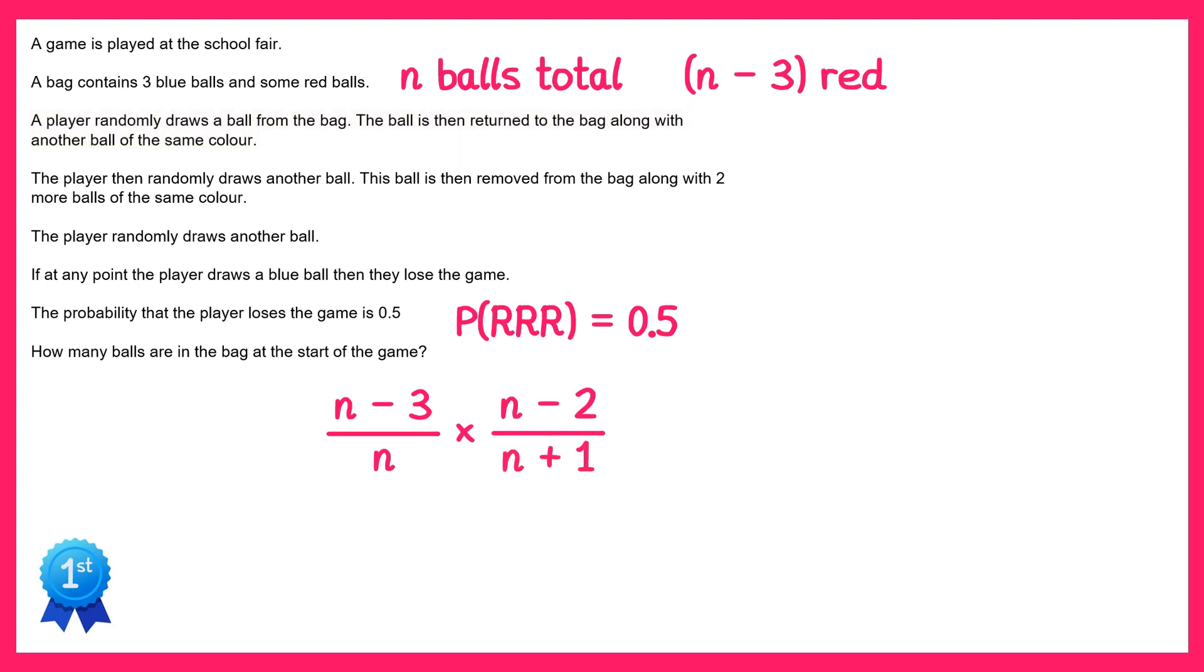Then we would multiply this by the probability of getting a red on the final pick. Now on the second pick, once you've taken the ball, the ball is then removed along with two more balls of the same colour. So this time we're going to take out the red, and also two more reds. So the number of reds in the bag is decreased by three, and also the total number of balls in the bag has decreased by three as well. So it will go from n minus two down to n minus five for red, and the total will go from n plus one down to n minus two.